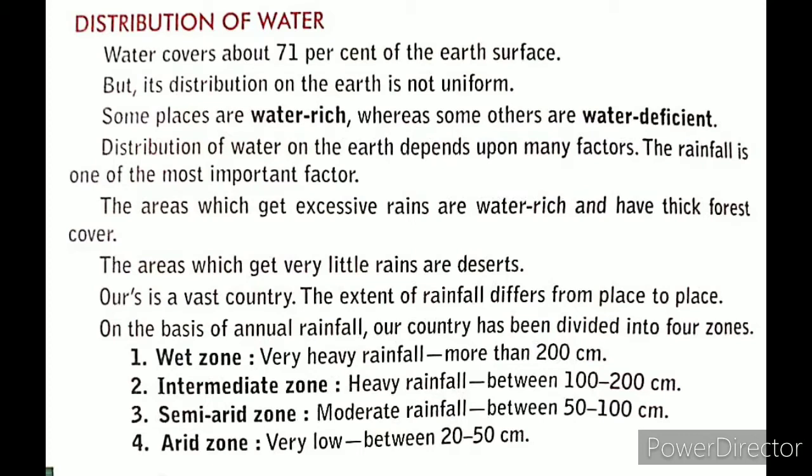On the basis of annual rainfall, our country has been divided into four zones. The first zone is the wet zone, which receives very heavy rainfall — more than 200 centimeters. The second is the intermediate zone, where heavy rainfall occurs between 100 to 200 centimeters. The third is the semi-arid zone, where moderate rainfall occurs between 50 to 100 centimeters. The fourth is the arid zone, which receives very low rainfall between 20 to 50 centimeters.